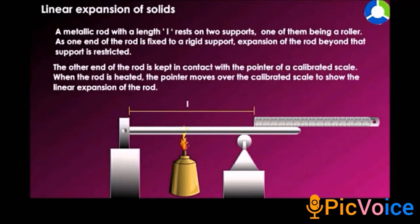A metallic rod of length L rests on two supports — one being a roller, another a rigid support — so expansion beyond that support is restricted. The other end of the rod is kept in contact with the pointer of a calibrated scale. When the rod is heated, the pointer moves forward over the calibrated scale to show the linear expansion of the rod. That is called linear expansion.